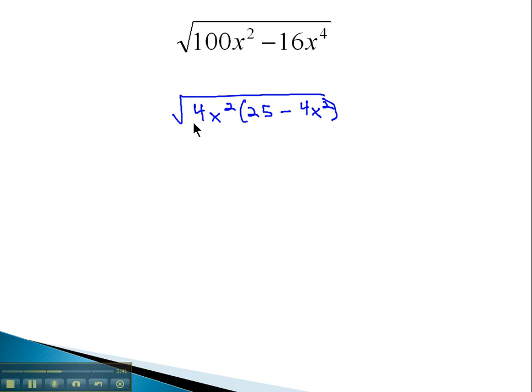What's more interesting to us is we can take the square root of 4, that's 2, and the square root of x squared, which is just x. We have 2x outside the square root, and left inside the square root is 25 minus 4x squared.